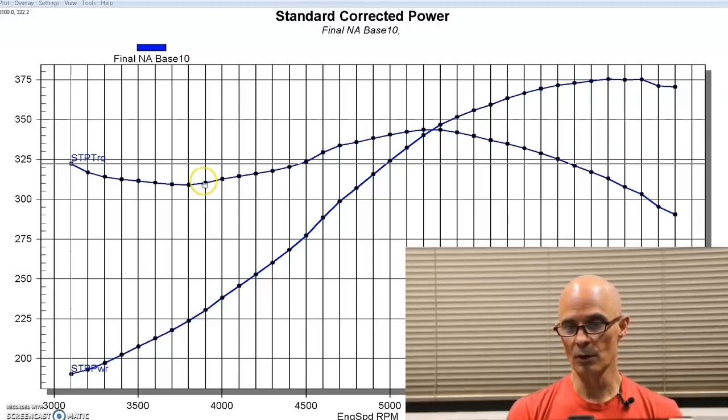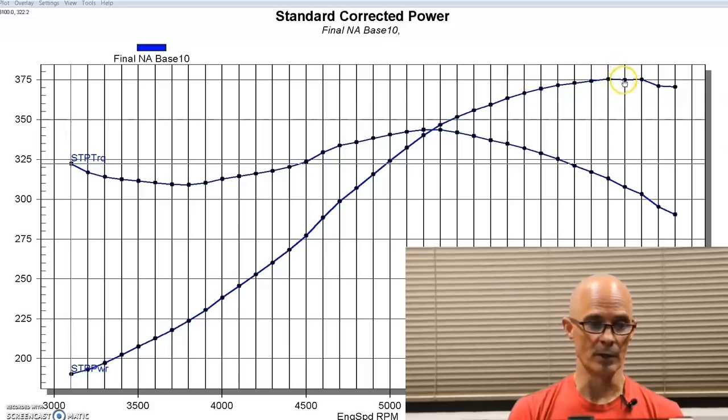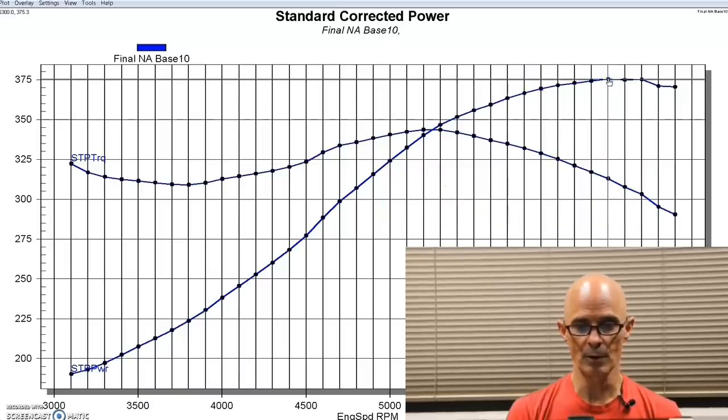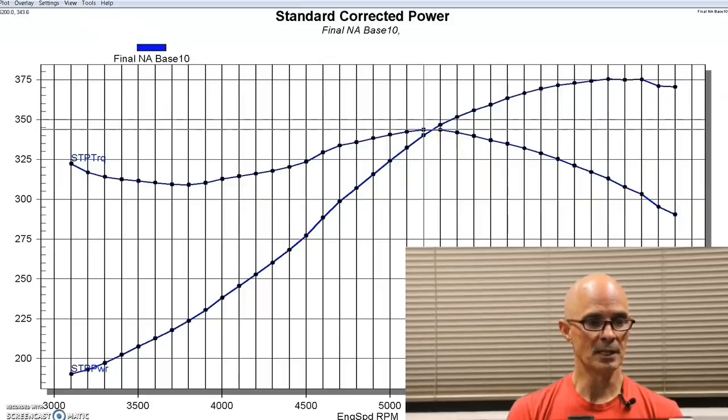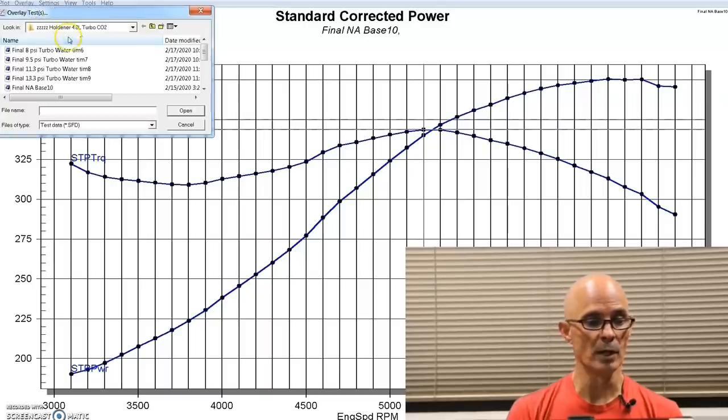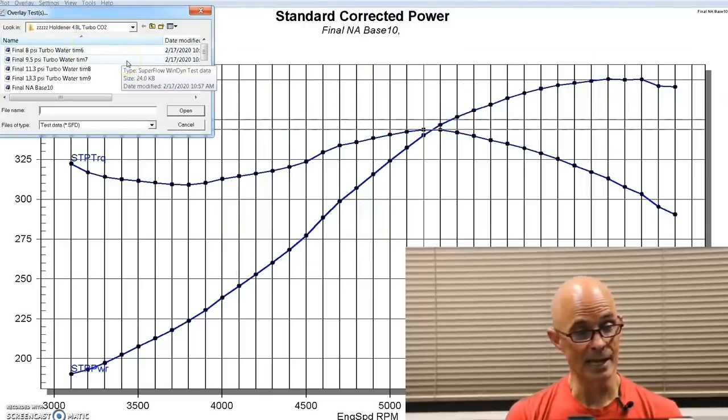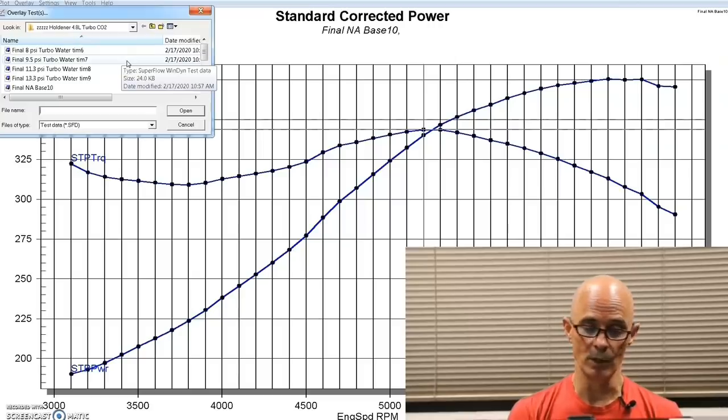So this is our naturally aspirated motor. It made 375 horsepower and 343 foot-pounds of torque. Now, let's take a look and see what happened after we started running some boost. And all of this was run on E85 as well. We didn't see any change on the NA motor when we added E85. I mean, it wiggled the power around ones and twos here and there, but it does make a difference when we run boost.